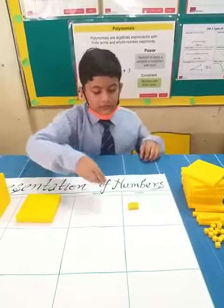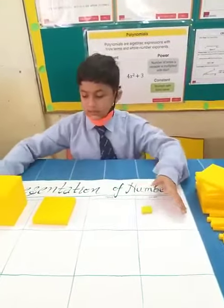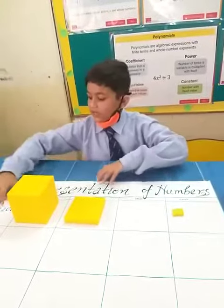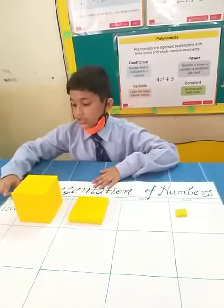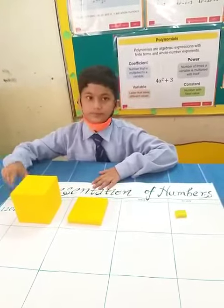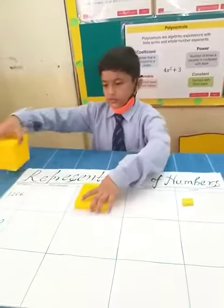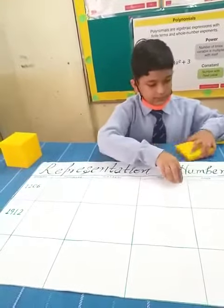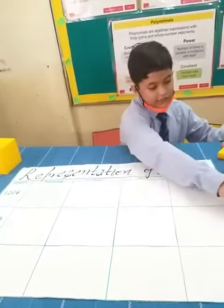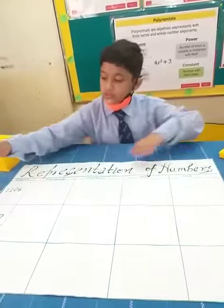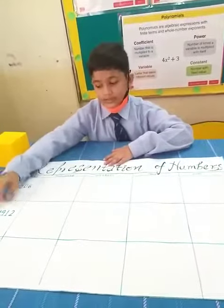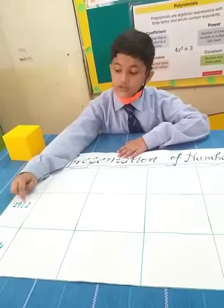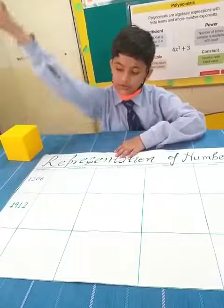The combination of the numbers is 1206. So, we will move to the next question. The next question is 1,912.